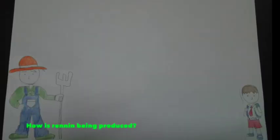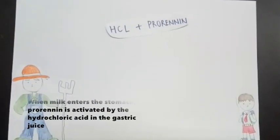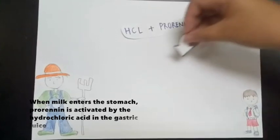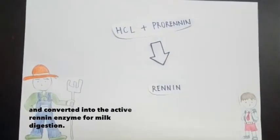How is renin being produced? Renin is produced as inactive pro-renin. When milk enters the stomach, pro-renin is activated by the hydrochloric acid in the gastric juice and converted into the active renin enzyme for milk digestion.